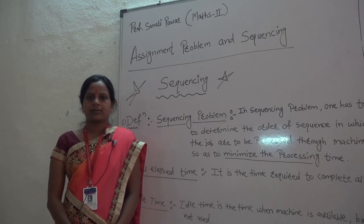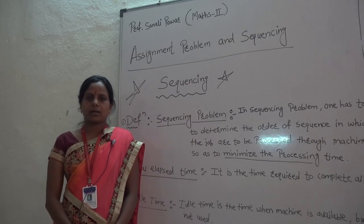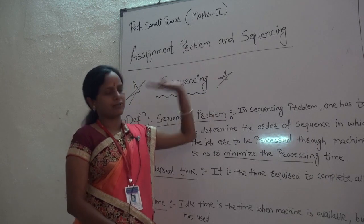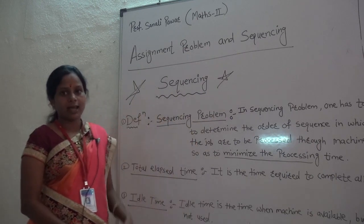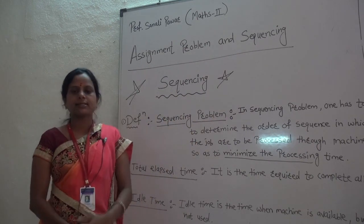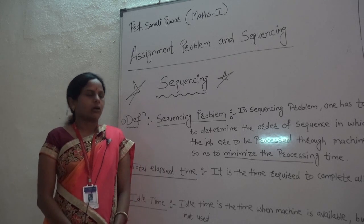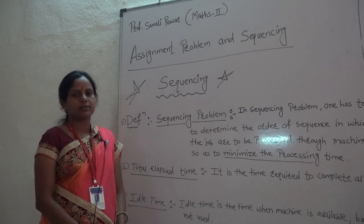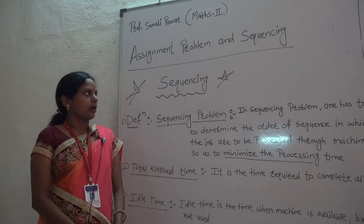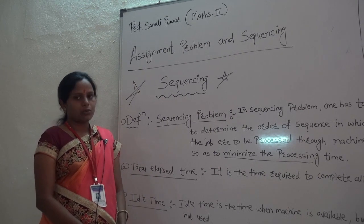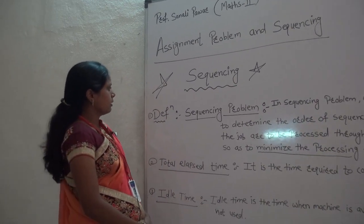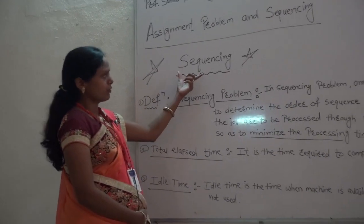Up to now we studied chapter 7, assignment problem and sequencing. In the last lecture we studied the assignment problem — what it is, how many methods it has, and their types and examples. So today we will be teaching about sequencing.